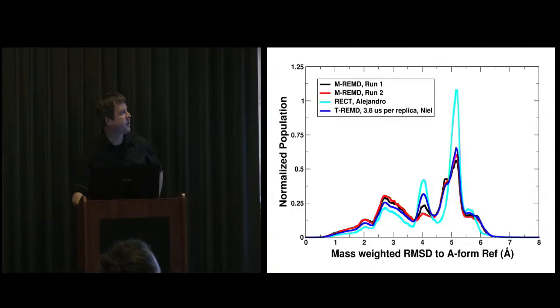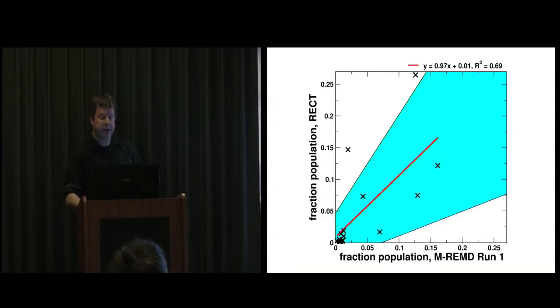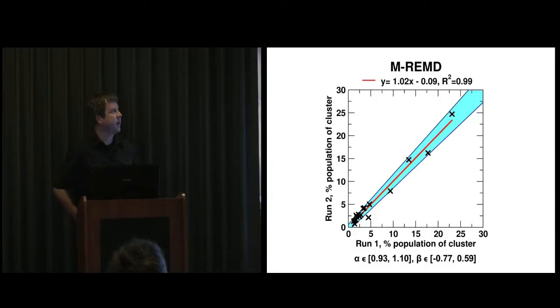Now what I want to talk about, here's an example where there's this method called RECT, replica exchange with continuous tempering from Giovanni Bussi in Trieste. Alejandro was in the country between two meetings and had a week and decided to come to my lab, so we were able to share the trajectories and see the results. Their paper says RECT-D is way more efficient than what Cheetham did in this multidimensional replica exchange. I said, let's compare the results, and you can see that the light blue distribution, although similar, is not the same as the dark blue, the red, and the black. If we actually compare the populations, there's a wide variance between what they're seeing and what we're seeing. Compared to our two independent simulations, essentially we get very strong agreement.